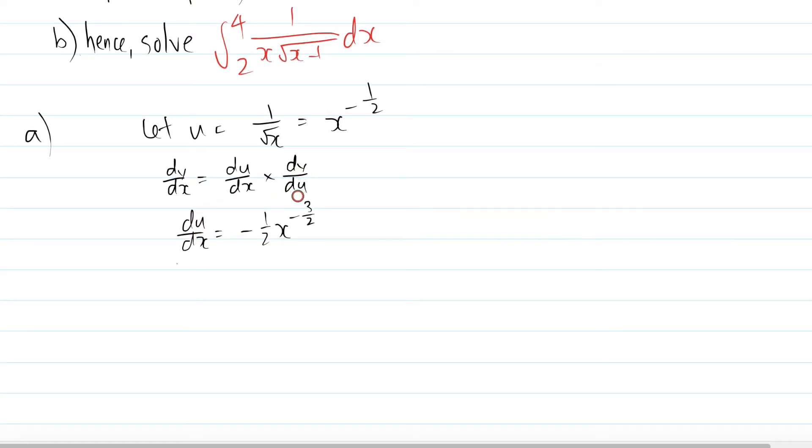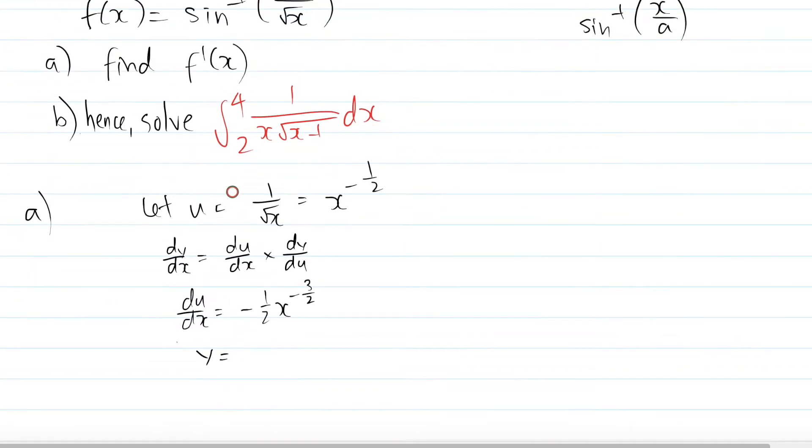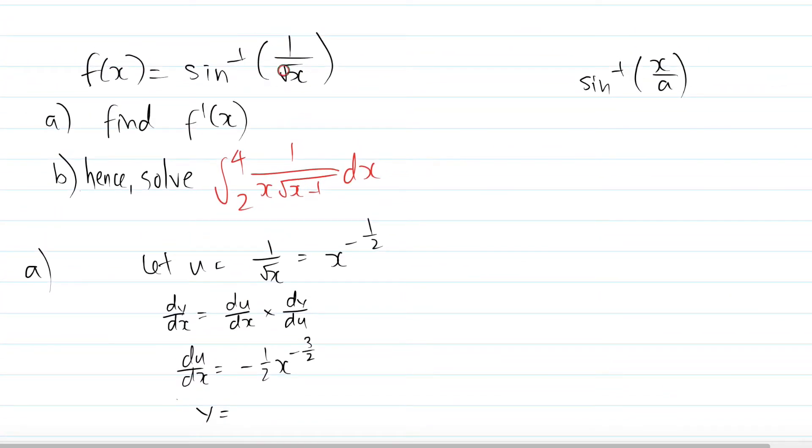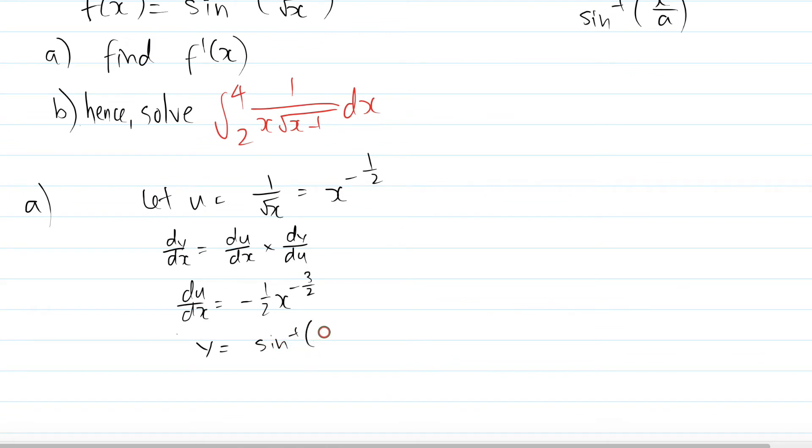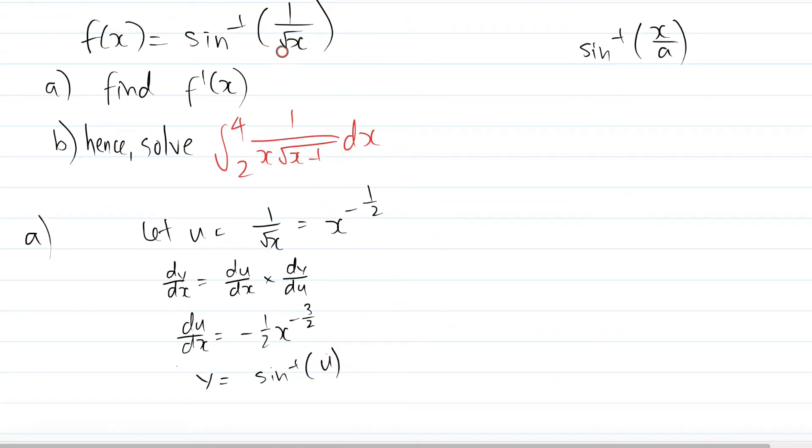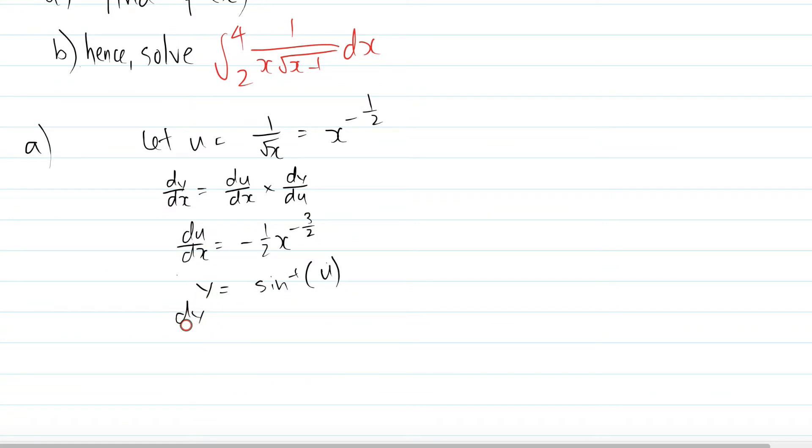How are we supposed to get dy/du? Well, we know that we let u equals 1 over the square root x, which is this function right here. So y, treat y as f(x), y equals sine inverse of u in this case. Because u is the function we let to be the inside. So y equals sine inverse of u. Yes, we can derive this. dy/du equals 2, sine inverse of u. So this is in that form, u of a. A in this case is 1. You can derive it, which you should get 1 over square root 1 minus u square.